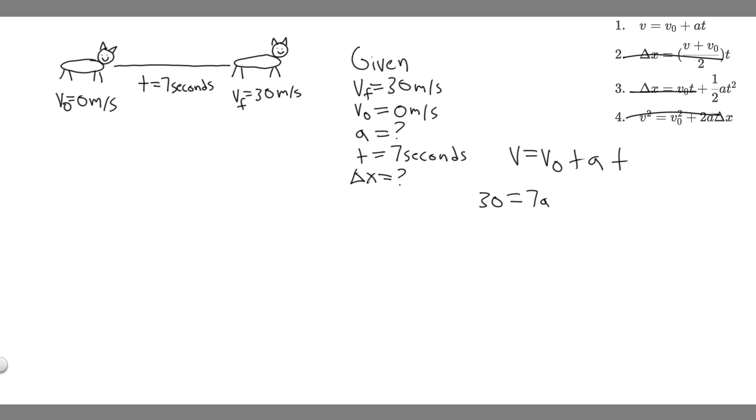So 30 equals 7a, and then divide by 7. You want to plug in your calculator, 30 divided by 7, and when you do that, you're going to get a equals 4.28.